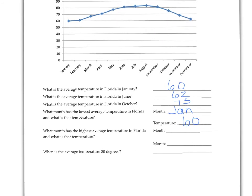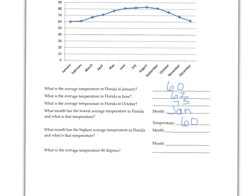What month has the highest average temperature in Florida, and what is that temperature? The highest point of the graph is right here, and that lines up with the month of August. The temperature is above 80, I would say it's about 83. So that would be August, and that's 83 degrees.